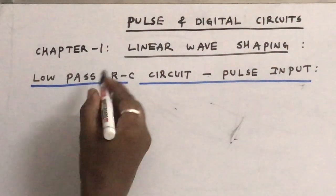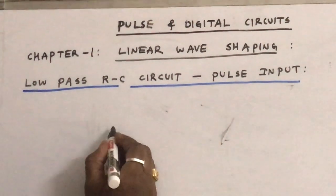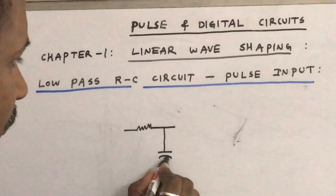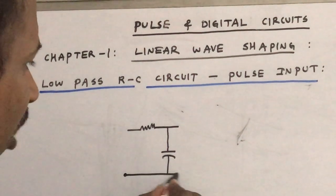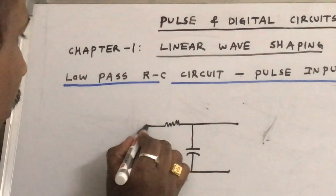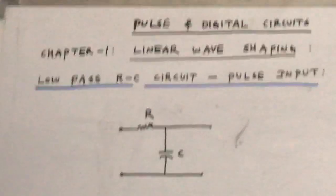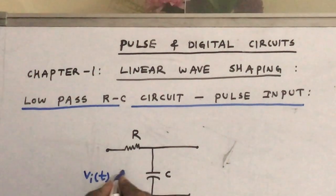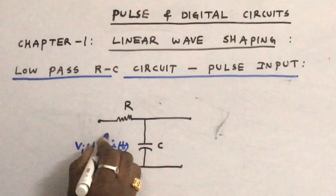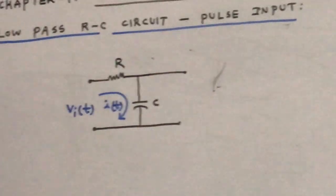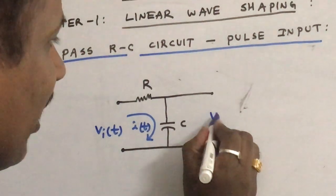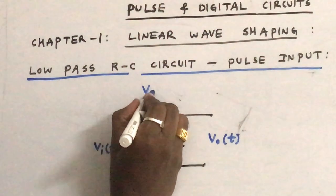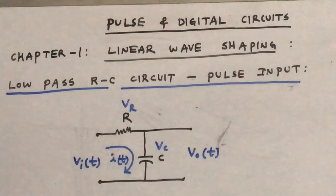The RC low pass circuit consists of two passive elements: a resistor and one capacitor, where we take the output voltage across the capacitor. Let Vi of t be the input voltage to the circuit. Because of this Vi of t, the current flowing in the loop is i of t, and the output across the capacitor is V0 of t. The voltage across the resistor is Vr and the voltage across the capacitor is Vc.